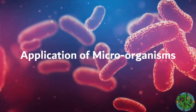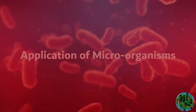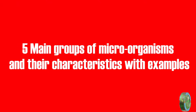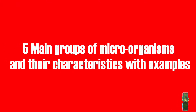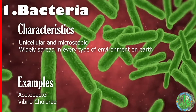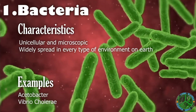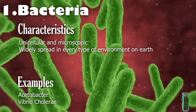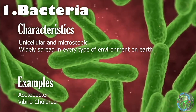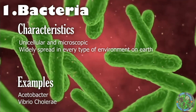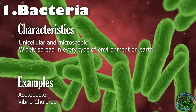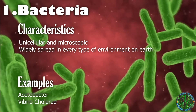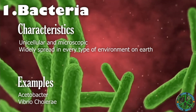Application of microorganisms — five main groups of microorganisms and their characteristics with examples. Number one: bacteria. Characteristics of bacteria are unicellular and microscopic, and bacteria are widely spread across every type of environment on Earth.